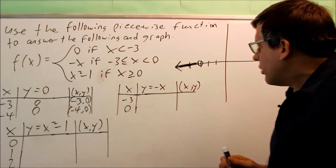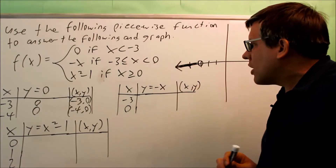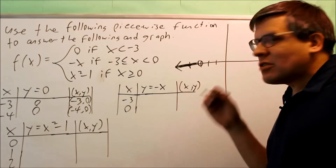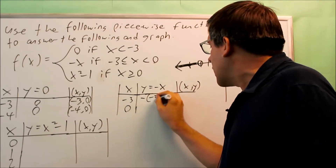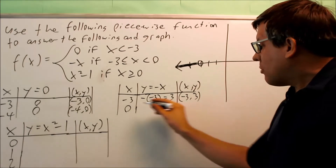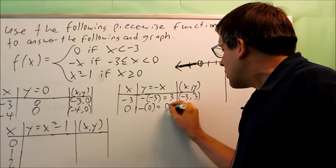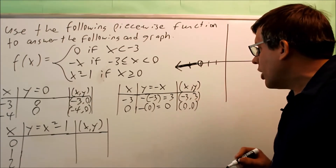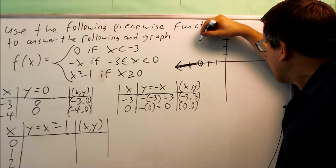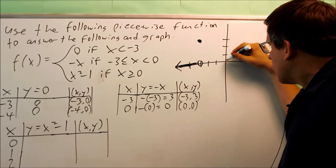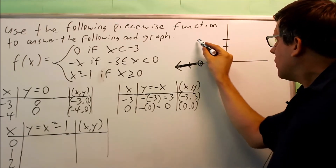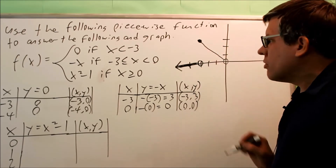For the second piece, y equals negative x, only between negative three and zero, so we see just a small segment of that line. Plugging in negative three gives negative of negative three, which is positive three — so the point is (negative three, three). Watch out for that double negative. Plugging in zero gives (zero, zero). Negative three is included in this piece, so it gets a closed circle; zero is not included, so it gets an open circle.